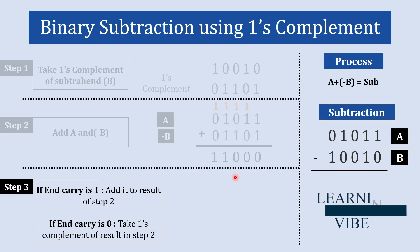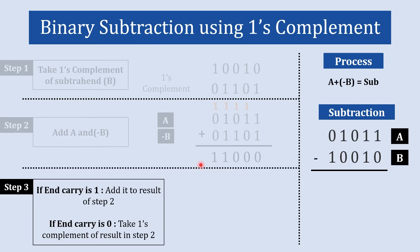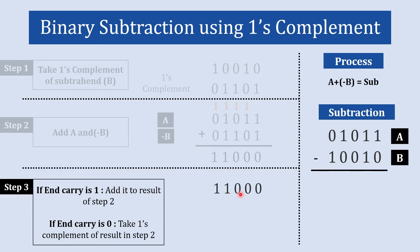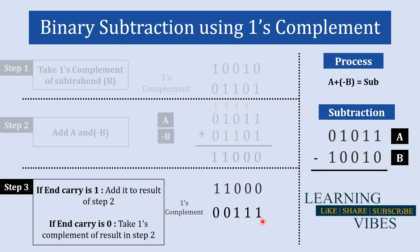When the end carry is 0, our final answer will be negative. The result of the addition is in one's complement form of the actual answer, so in order to get the actual answer we take the one's complement of that result. Taking the one's complement gives us 0 0 1 1 1, and since the answer is negative, our actual answer is minus 0 0 1 1 1.